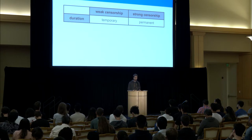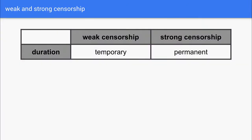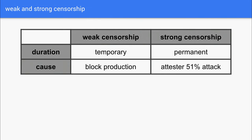Weak censorship is different from strong censorship, where your transaction simply doesn't make it on-chain at all. The cause is very different: weak censorship comes from block production — somewhere in the MEV supply chain pipeline — and leads to some fraction of blocks censoring. Strong censorship, on the other hand, originates from attesters and is basically a 51% attack. In this talk we're going to ignore strong censorship.